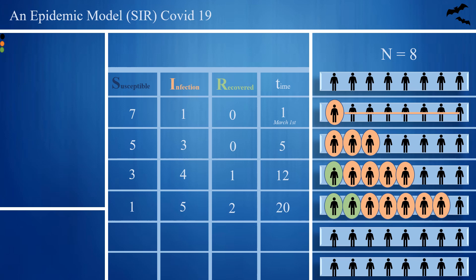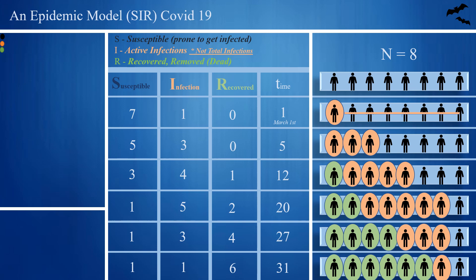R is at 2, I increases to 5, S reduces to 1. On the 27th day, recovery increases further, I reduces to 3, S stands at 1. On the 31st day, 6 people recover, active infections reduce to 1, and S stands at 1. In future, the 8th person may or may not be infected. I is active infection subjects, S is susceptible subjects, and R is recovered subjects, which includes recovered, removed, and dead people together, because none of them contribute to either I or S.